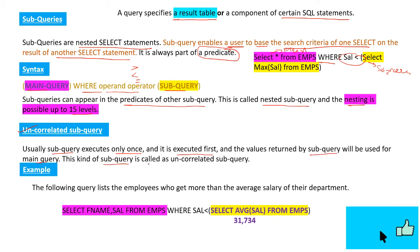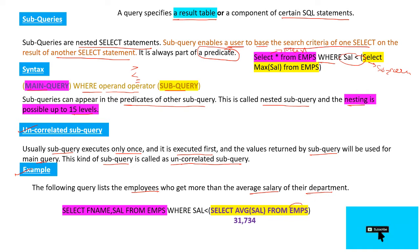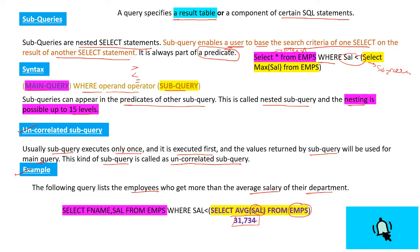The value returned by the subquery will be used for the main query — this kind of subquery is called an uncorrelated subquery. For example, the following query lists employees who earn more than the average salary of their department. From the EAMPS table, it will calculate the average salary from the salary column, which comes out to thirty-one thousand seven hundred thirty-four. All employees whose salary is less than this number will be displayed in the result table.